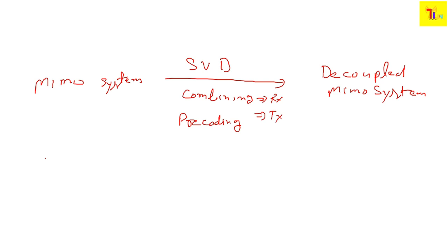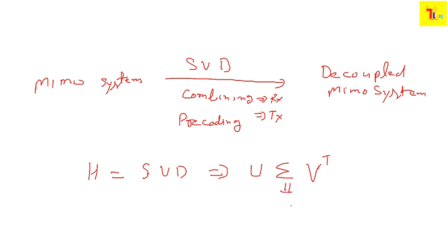The whole process involves decoupling the MIMO system using a combining vector and pre-coding vector. We decompose the channel coefficient matrix H into SVD format: H = U·Σ·V^T. The middle component Σ is the singular value matrix, which is diagonal. In MATLAB, a simple SVD command for any matrix will decompose it into this format. That's all for this video — next time I will discuss more related concepts.